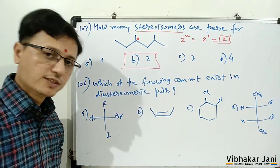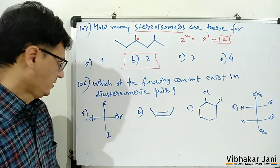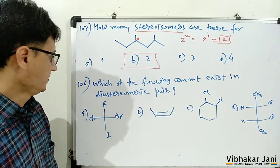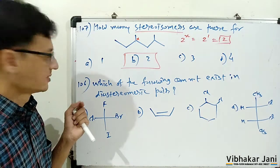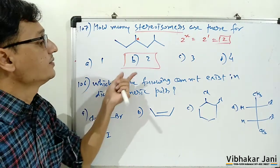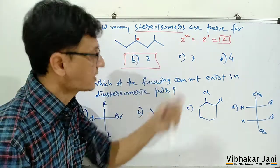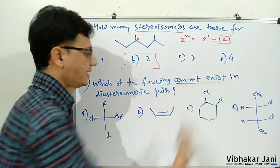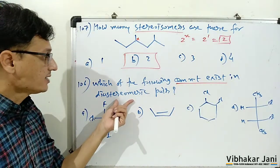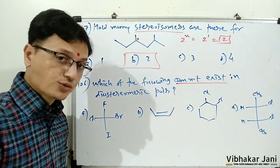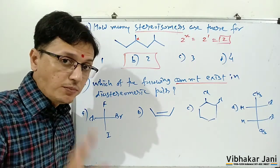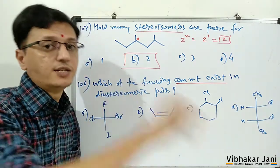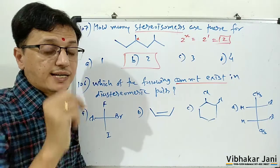Okay, now let us move to the next question, this is 106. Which of the following cannot exist in diastereomeric pair? So first of all, a compound to be diastereomer, it must have at least two stereocenters.